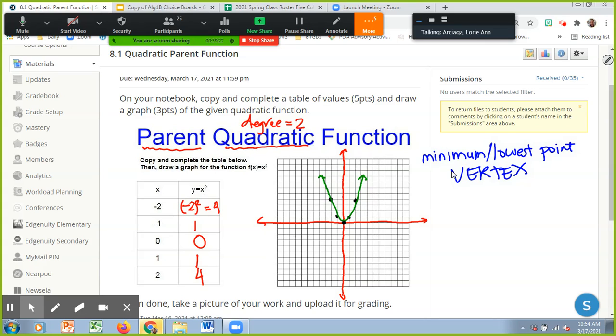So the minimum or the lowest point is called the vertex. And for this chapter, vertex is life. I know that sounds cheesy, but for this chapter, vertex is life. If you will just learn how to find the vertex, you're going to survive this chapter. So the vertex is 0, 0, because that's your lowest point. It's the bottom most point of the graph.